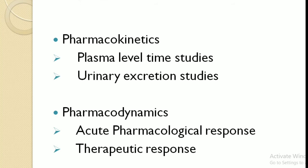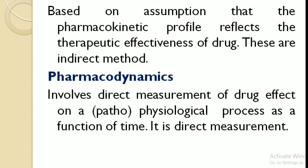Now we will talk about estimation methods — how we are going to estimate bioavailability. There are two methods: pharmacokinetic and pharmacodynamic. In the case of pharmacokinetics, we can use plasma level time studies and urinary excretion studies; in pharmacodynamics, we use acute pharmacological response and therapeutic response. Pharmacokinetic methods are indirect, based on the assumption that the pharmacokinetic profile reflects the therapeutic effectiveness of the drug. Pharmacodynamic methods involve direct measurement of drug effects on physiological processes as a function of time, making it a direct measure.